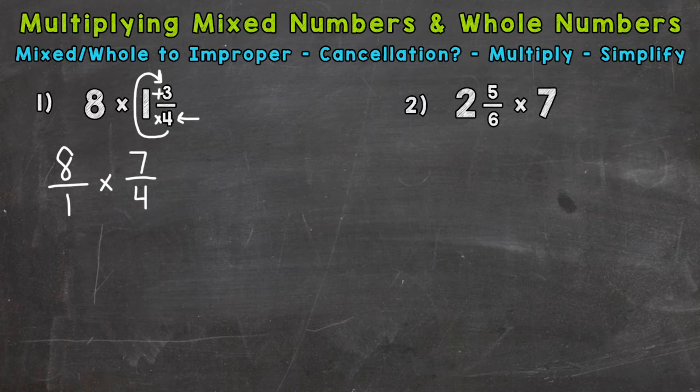So now we have the mixed number and whole number in fractional form. We have numerators and denominators. Now we can multiply straight across. But before doing so, you can check to see if you can use cancellation, cross-cancellation.